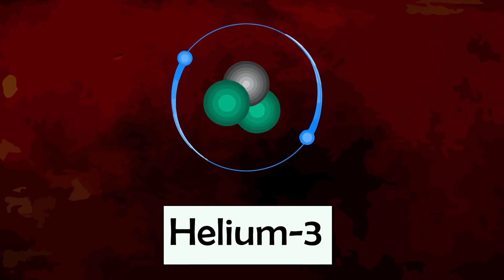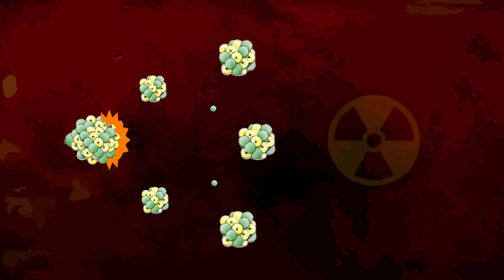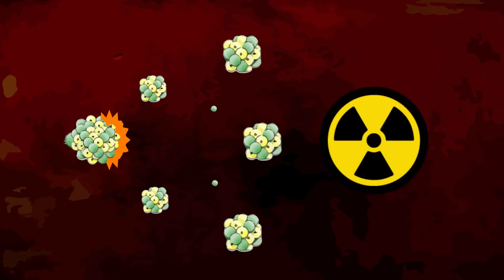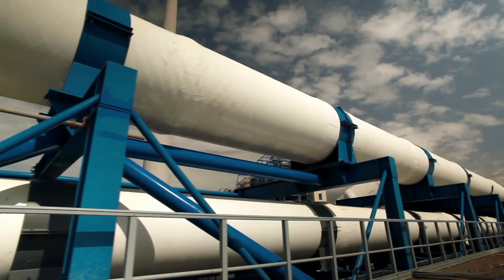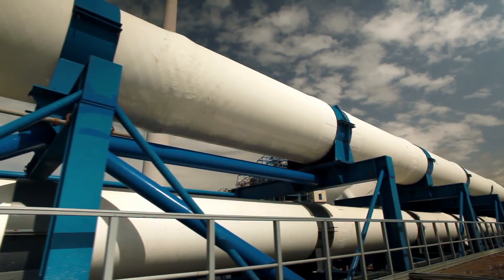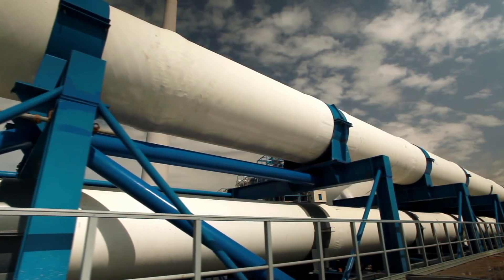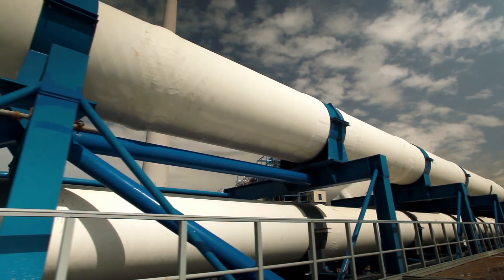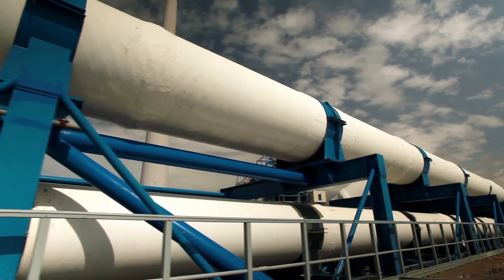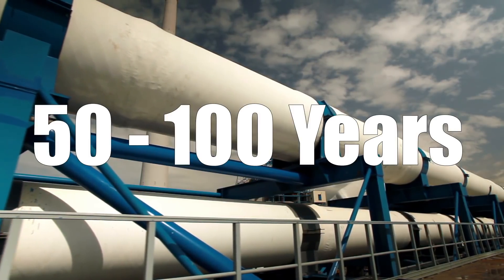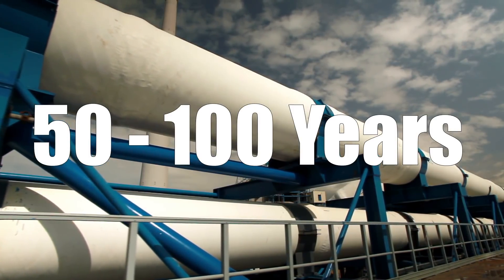Another valuable resource on the Moon would be Helium-3, which is in short supply on Earth. In most nuclear power plants, nuclear fission reactors are used, in which uranium nuclei are split apart, releasing energy and radioactive waste. Helium-3 has the potential to be used as a fuel in future nuclear fusion reactors and would produce little radioactive waste. However, it's likely such a technology will not be available for at least another 50 to 100 years.